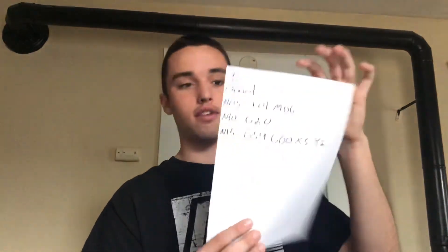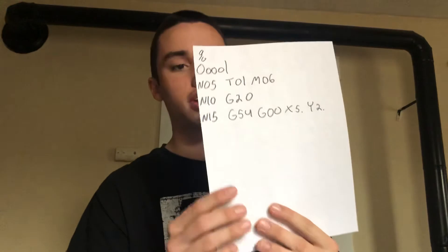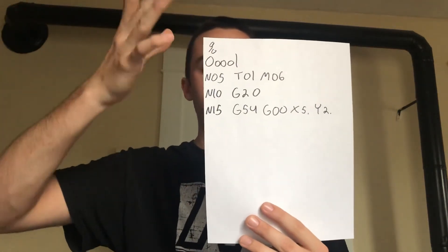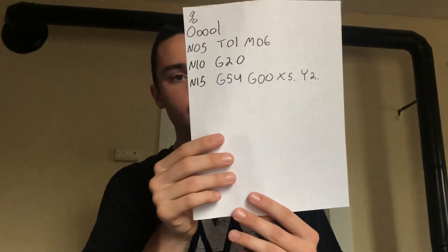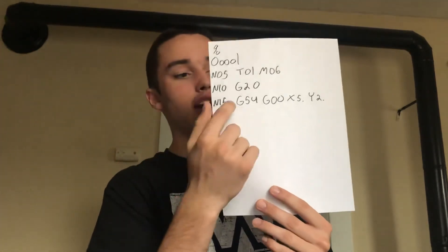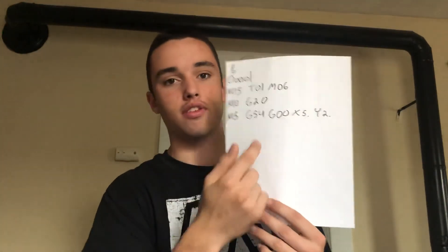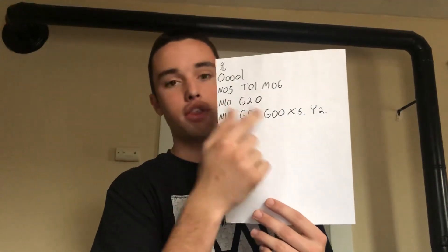Here's what a quick program would look like and where you'd place G20. You have your percent sign, the program name, the tool callout, and then G20 to set imperial mode. After that you can call up your coordinates — you can't call coordinates until you specify whether you're in G20 or G21. A lot of machines are preset to one or the other, so you don't always have to include it, but it's always good practice to have it visible in your program for reassurance.